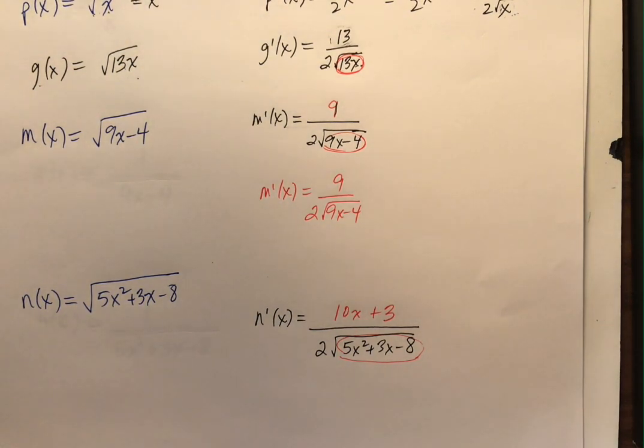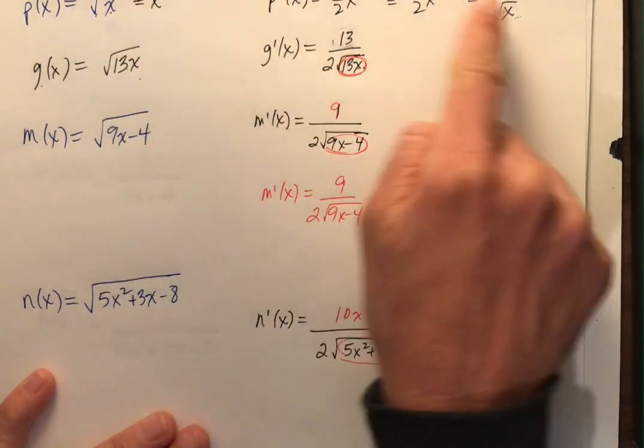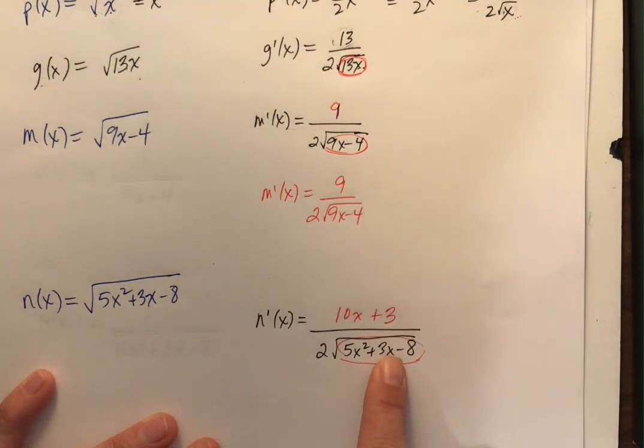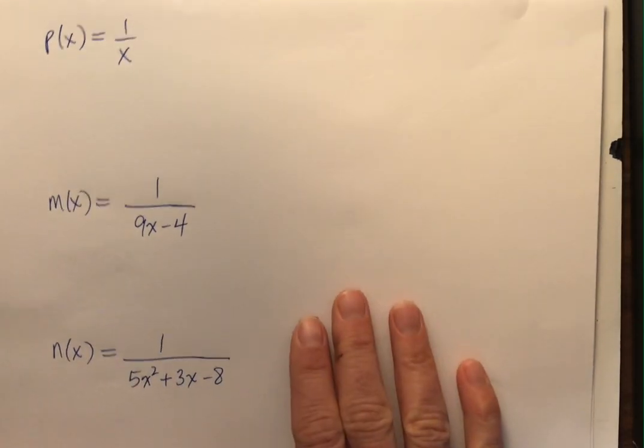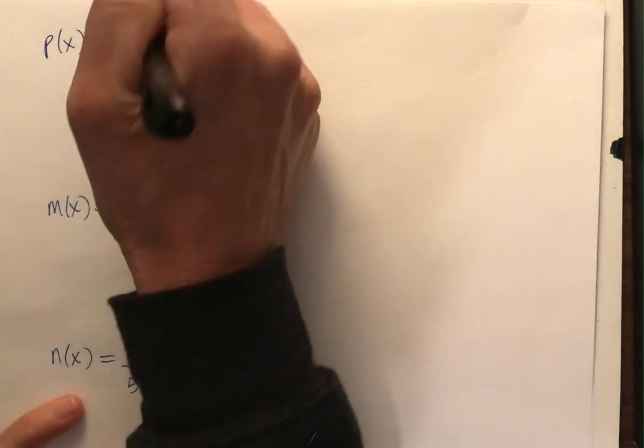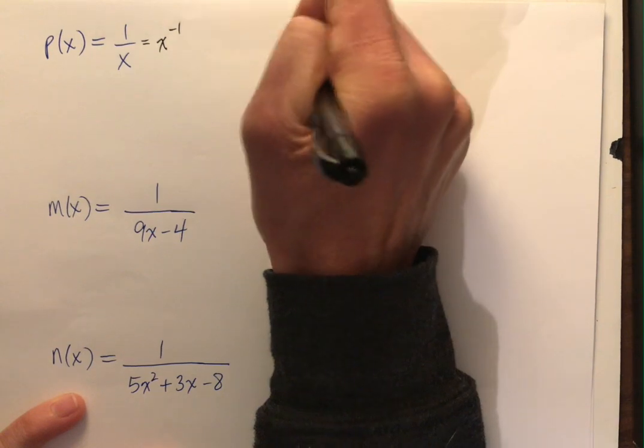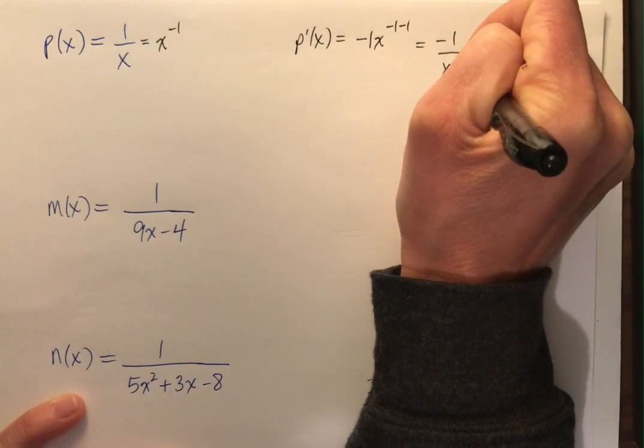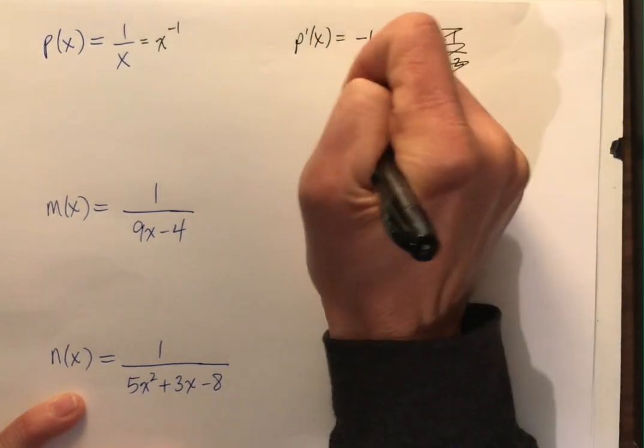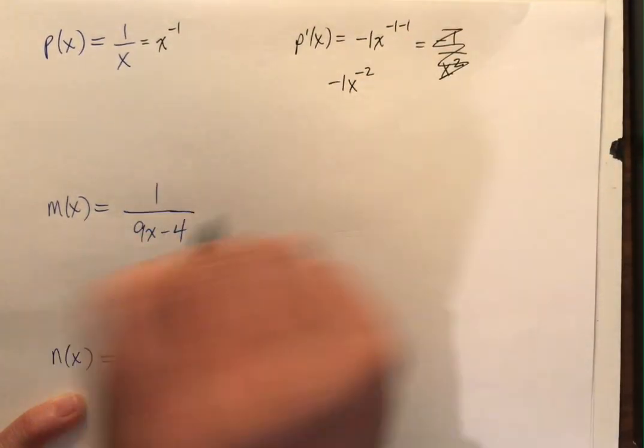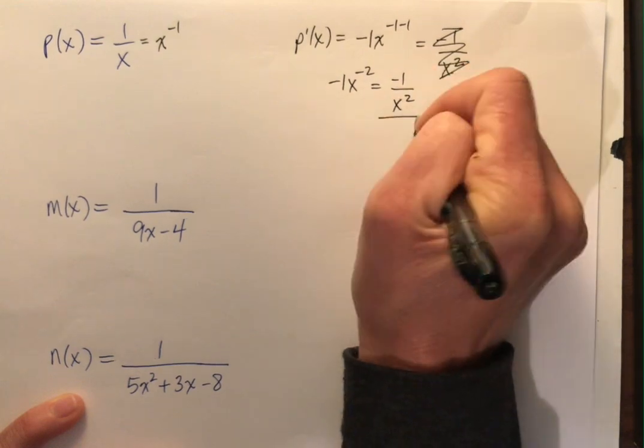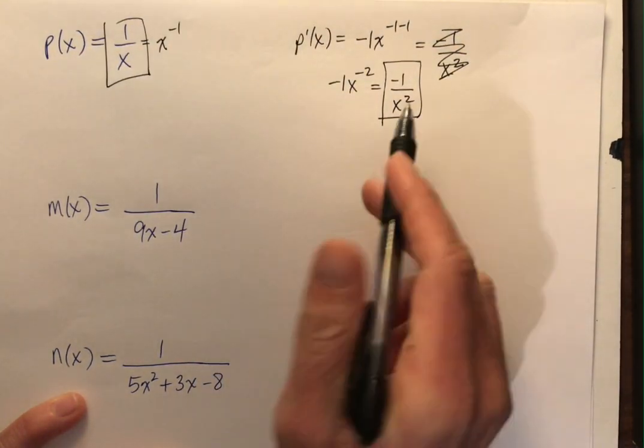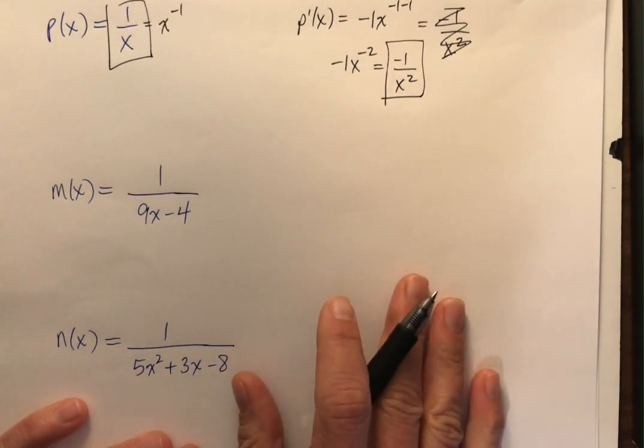We're going to do one more set of rational functions. But just this idea, you do your derivative of your radical times the derivative of what's underneath that radical. So check out this guy. So p of x is 1 over x, which is x to the negative 1. So p prime of x is negative 1 x to the negative 1 minus 1. Let's go back. Negative 1 x, negative 1 minus 1, negative 2. I don't like negative exponents. Negative 1 over x squared. There's your function. There's the derivative.